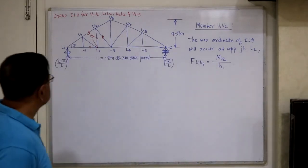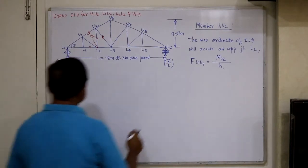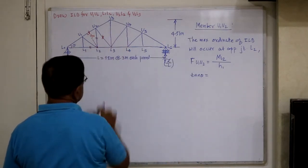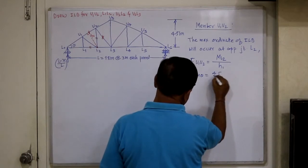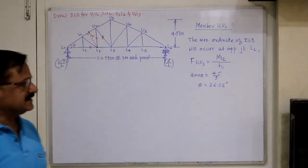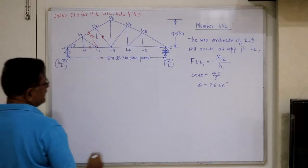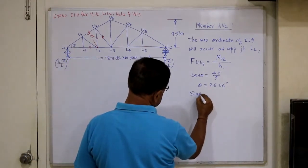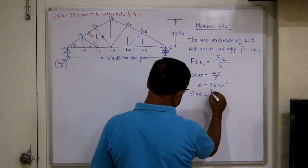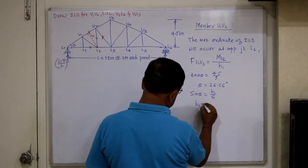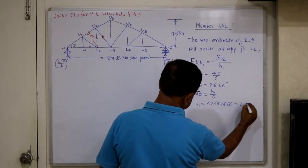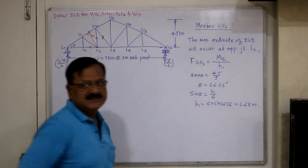To find H1, if we know angle theta: tan theta equals 4.5 divided by 9, so theta equals 26.56 degrees. Knowing theta, and considering the right-angle triangle, H1 divided by 6 gives us H1 equal to 6 times sin(26.56), which equals 2.68 meters.